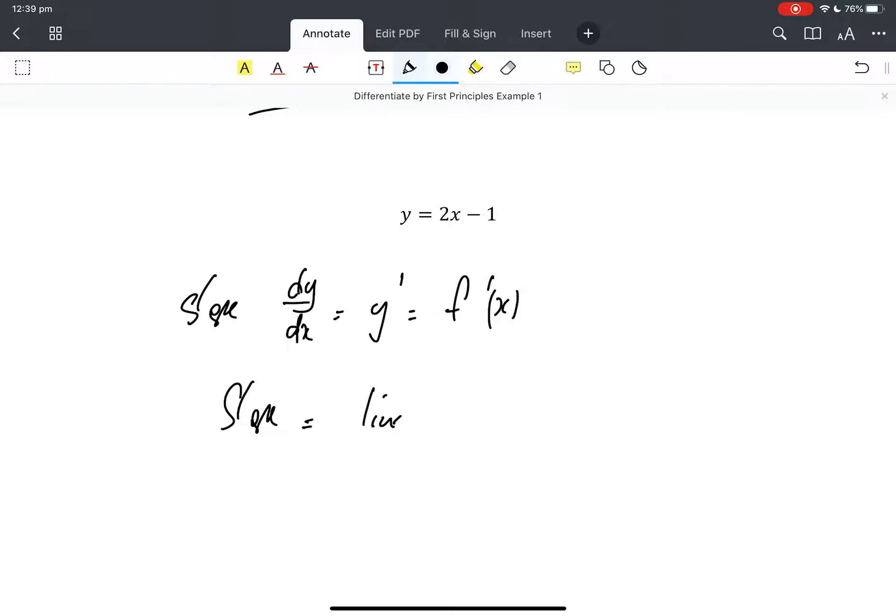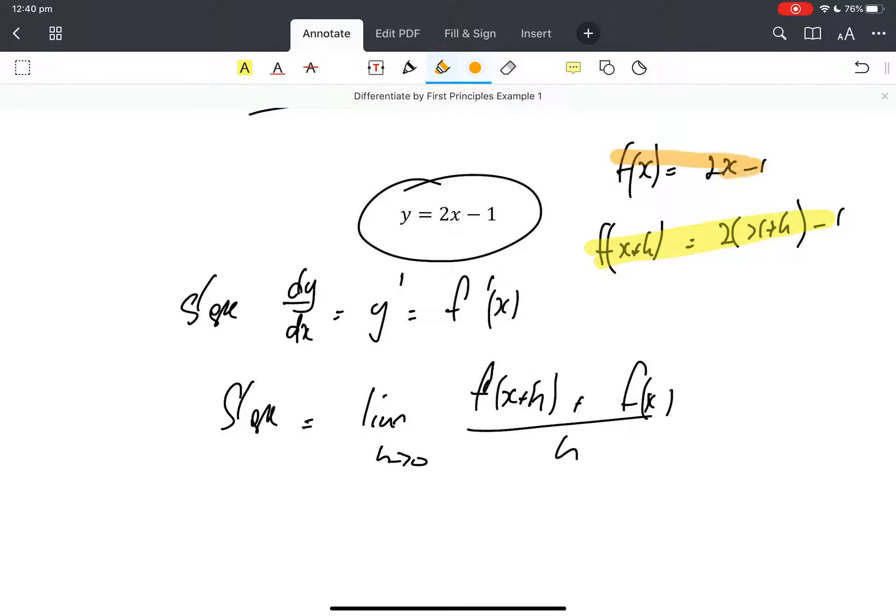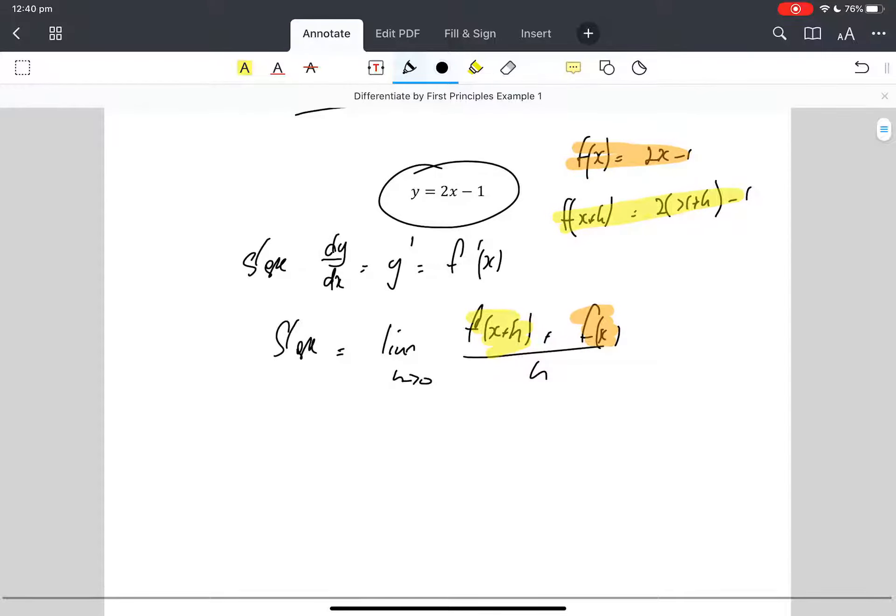Slope equals the limit where h approaches 0 of f(x+h) minus f(x) all over h. I'm thinking of this as f(x) equals 2x minus 1, which means f(x+h) is 2(x+h) minus 1. So there's f(x+h), and there's f(x). Hey, there's f(x), and that's f(x+h). So all we need to do is we need to slot it in.